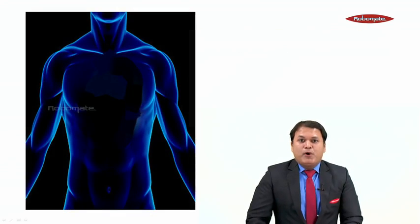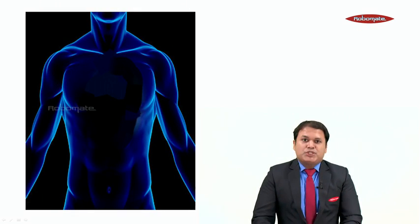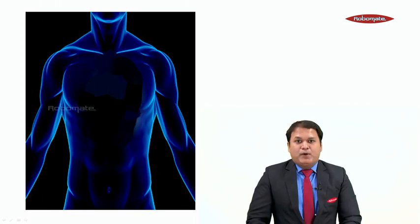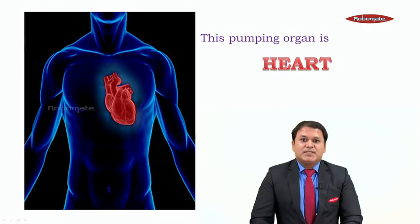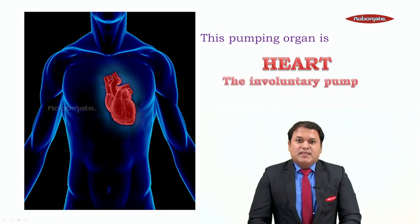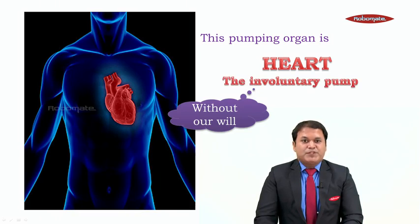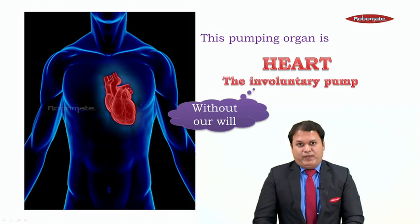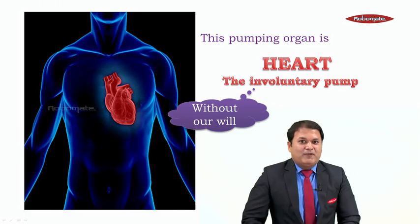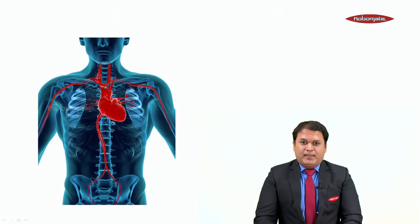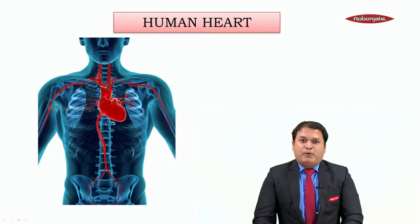Students, we learned that blood is a fluid connective tissue, and we also saw that a pumping organ is needed to push the blood across the body. This pumping organ is the most important organ of the body — the heart. The heart is an involuntary pump, which means it functions without our will, working 365 days a year, 24 hours a day, continuously beating. Now let us study about the human heart.